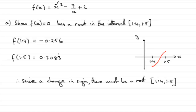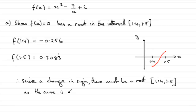The curve is also continuous over that interval — we must stress that, because there might have been a break. There would be a discontinuity when x is 0, but clearly over this interval there are no breaks. So since the change in sign and as the curve is continuous, there must be a root. I hope that gives you the idea of how to go about answering that particular type of question.